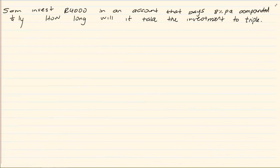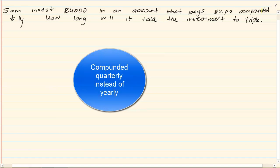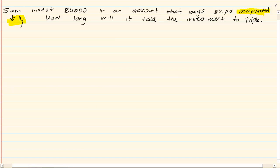Let us take the same question that we had, but I have now changed something very simple. I have got Sam invested 4000 rand into an account that pays 8% per annum, but it is compounded quarterly. How long will it take his investment to triple? Now based on all our previous financial maths, we know we start by writing down our PAIN.